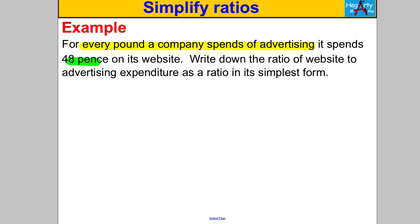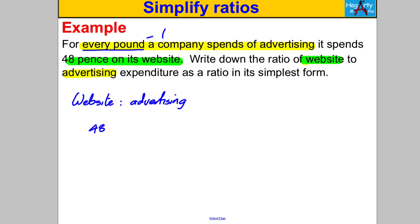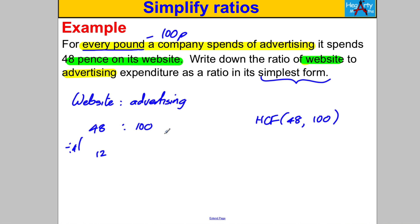For every one pound a company spends on advertising it also spends 48 pence on its website — write the ratio of website to advertising expenditure in simplest form. Website is 48 pence, advertising is one pound which is 100 pence, so the ratio is 48 to 100. The HCF of 48 and 100 is 4, so divide both sides by 4 to get 12 to 25. No other number divides both 12 and 25, so that's our simplest form.